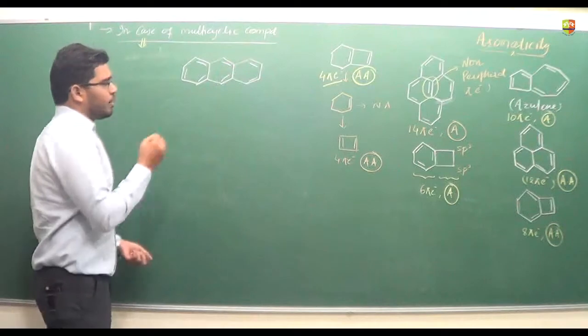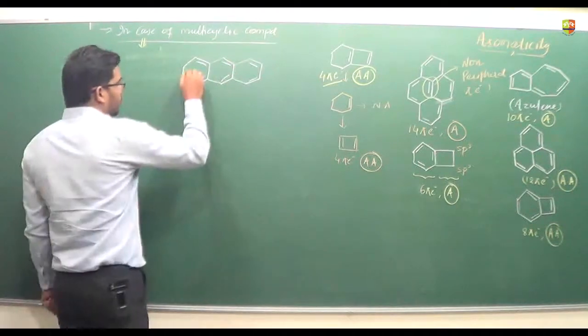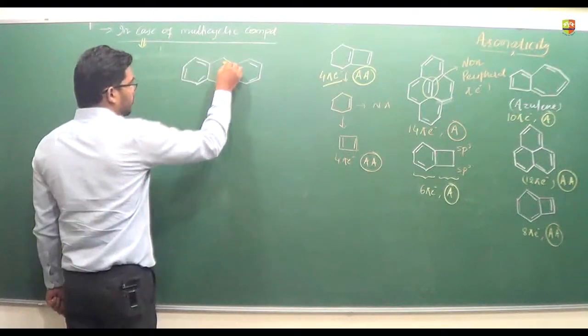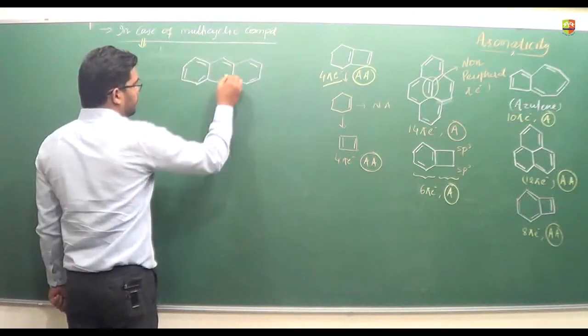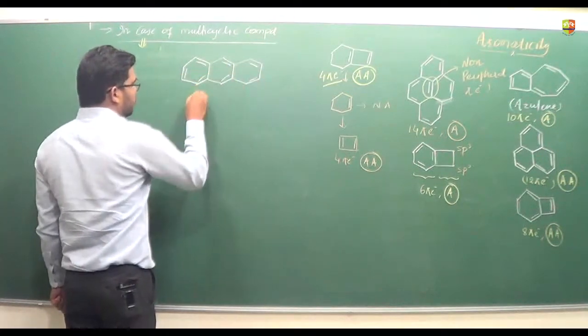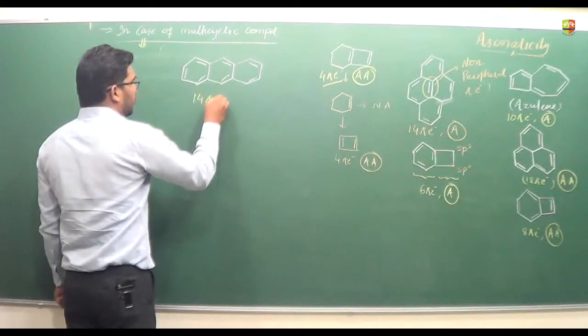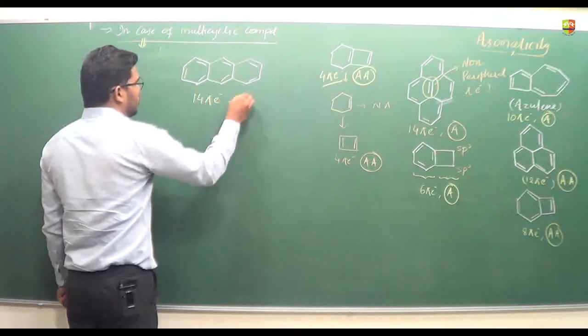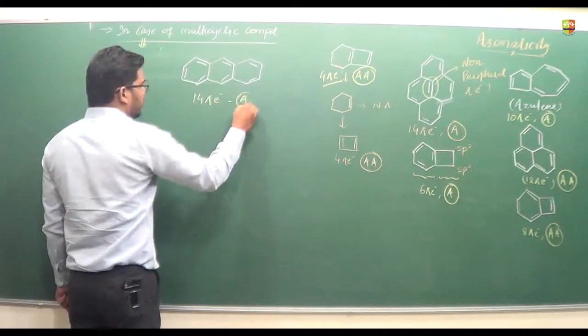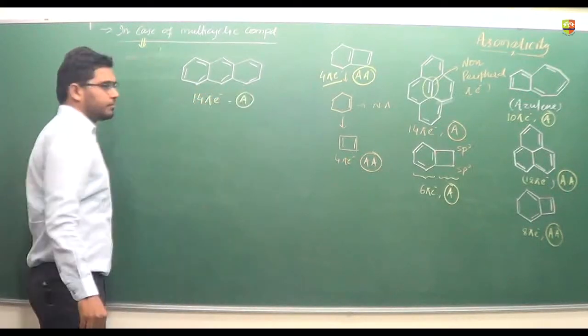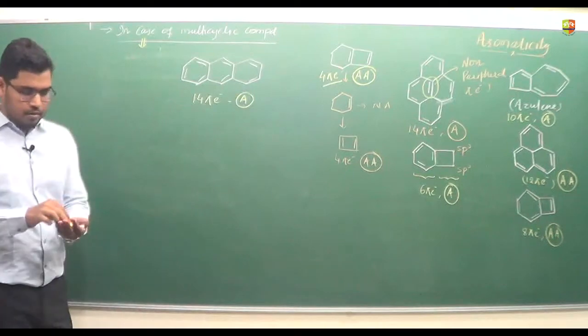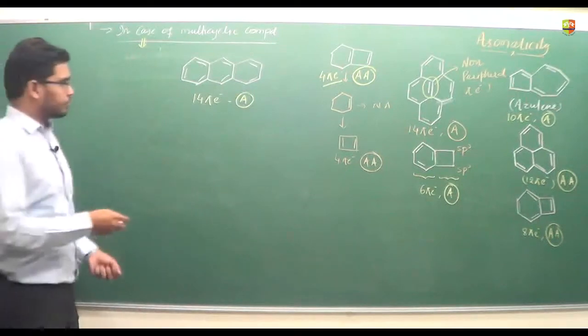How many peripheral pi electrons? 1, 2, 3, 4, 5, 6, 7 — so 14 pi electrons. Therefore, 14 pi electrons is aromatic in nature.